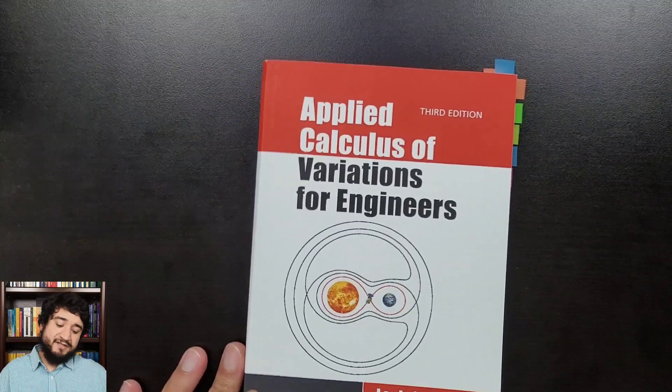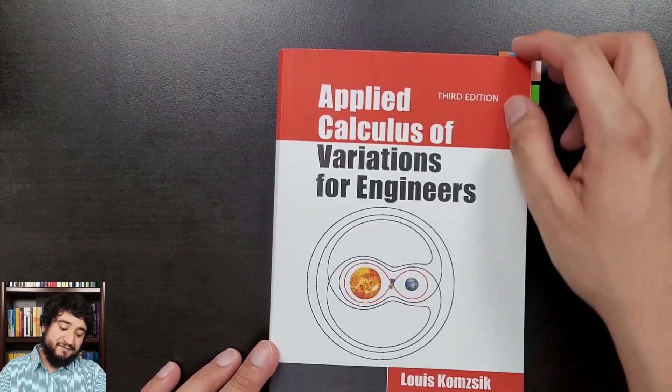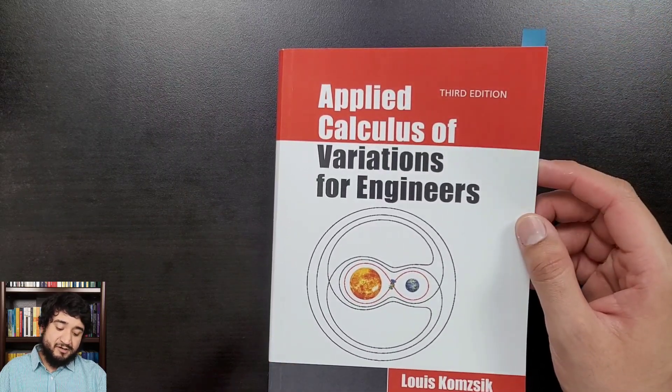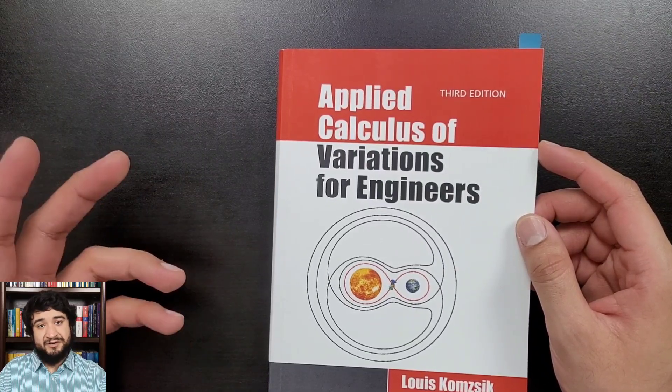Here we've got Applied Calculus of Variations for Engineers, third edition, by Lewis Komsic. This book cost me about 50 bucks on Amazon. As far as prerequisites go, I would say multivariable calculus, linear algebra, partial differential equations, and some physics.